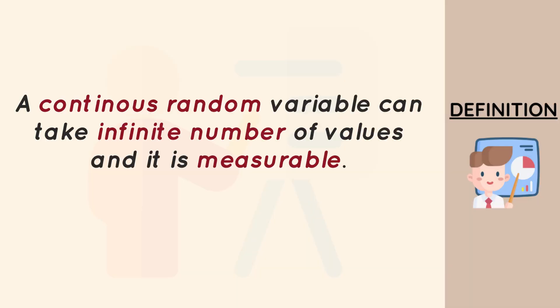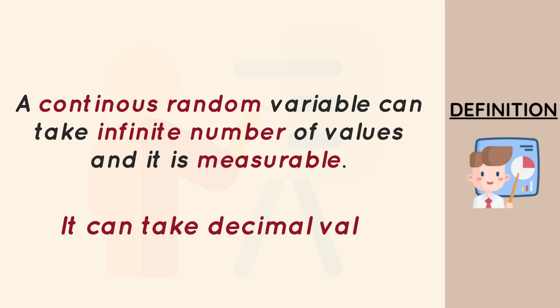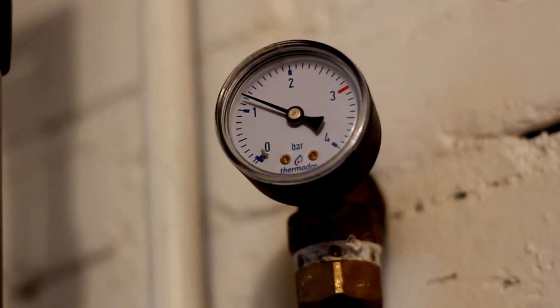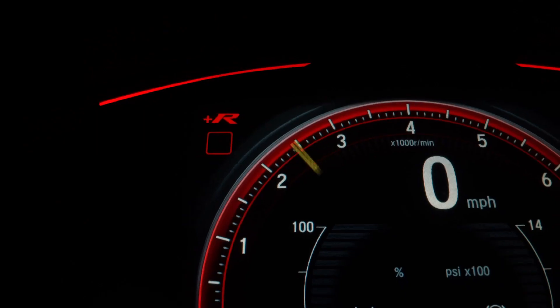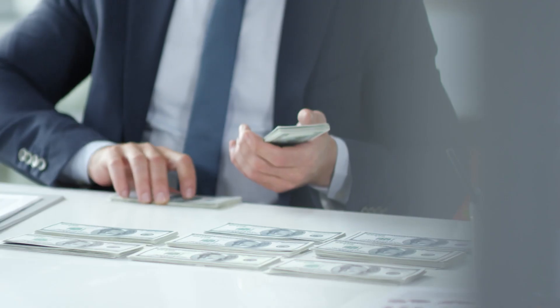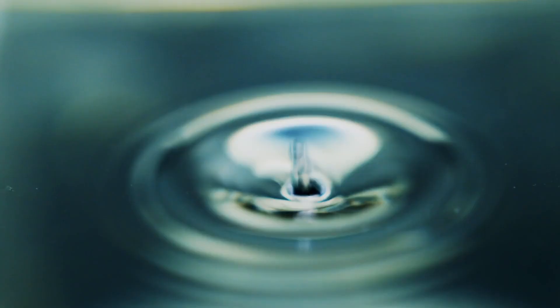A continuous random variable, on the other hand, can take an infinite number of values — or a wide range of values — and it can also take decimal values. Examples of continuous random variables include pressure, weight, speed, amount of money, and volume, just to mention a few.